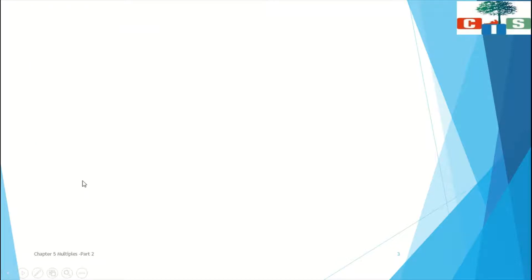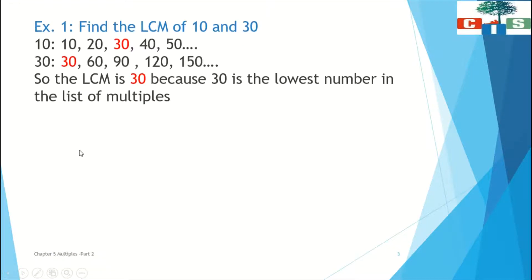Our first example is: find the LCM of 10 and 30. The first step is to write the multiples of 10, then write the multiples of 30, and then find the lowest common number among them.